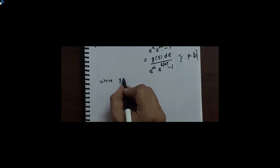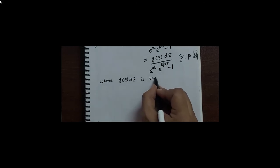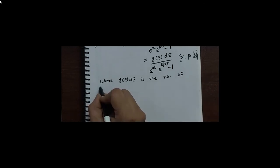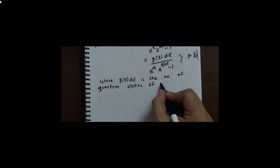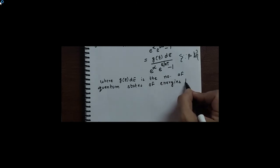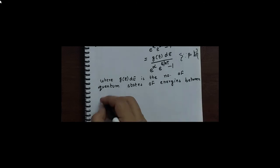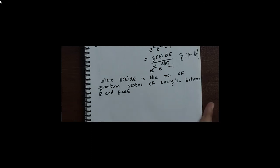Here, G(E)dE is the number of quantum states of energies between E and E+dE.